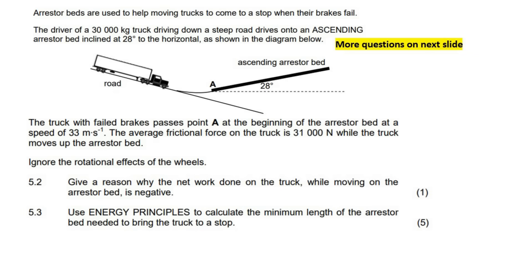Here they say that the truck with the failed brakes passes point A at the beginning of the arrestor bed at a speed of 33 meters per second. The frictional force on the truck is 31,000 newtons while the truck moves up the arrestor bed. Ignore the rotational effects of the wheels. Give a reason why the net work done on the truck while moving on the arrestor bed is negative.